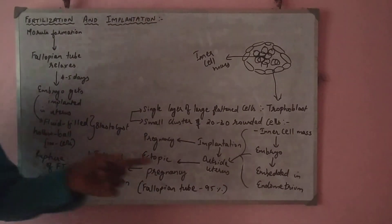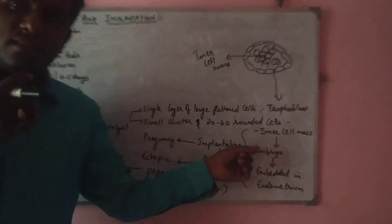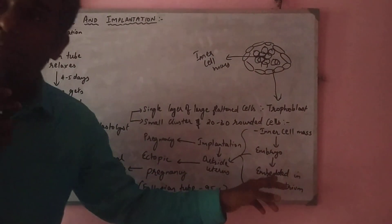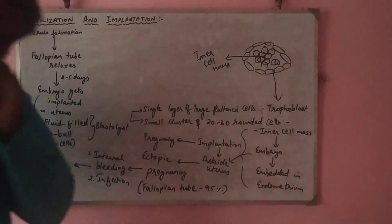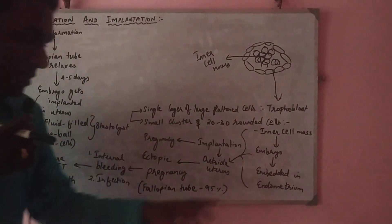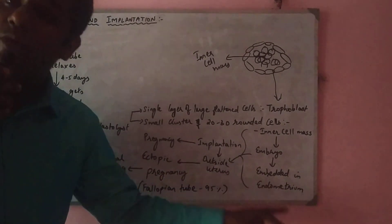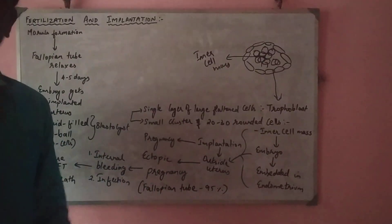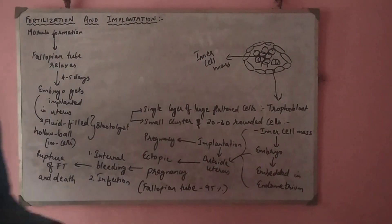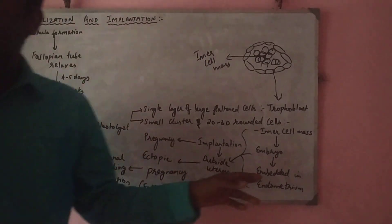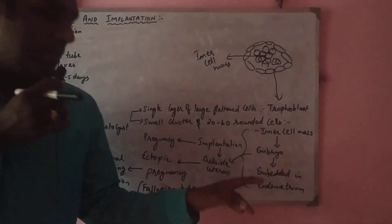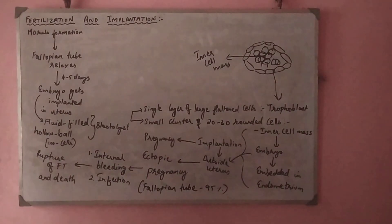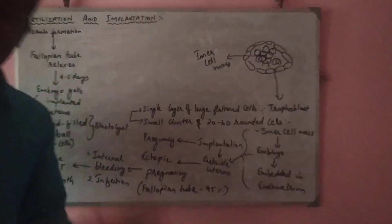It is this inner cell mass which will develop into an embryo, and it is this embryo which will get embedded in the uterus — specifically in the endometrium layer of the uterus. The process by which the inner cell mass develops into an embryo and gets embedded in the endometrium is called implantation.